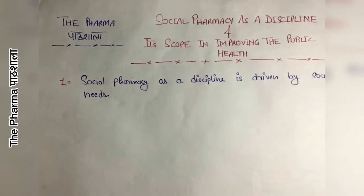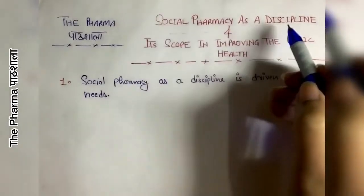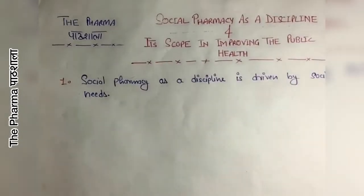So the next topic of Chapter 1 is Social Pharmacy as a Discipline and its scope in improving the public health. So students, Social Pharmacy as a Discipline — what does this mean? If we take Social Pharmacy as a discipline, then what is the goal of Social Pharmacy?